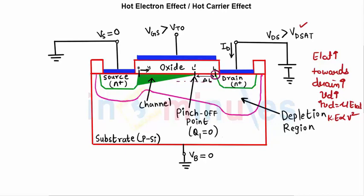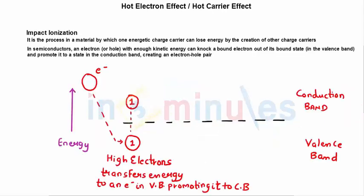The electric field is highest at that particular point near the drain. Impact ionization is a process in a material by which one energetic charge carrier can lose energy by the creation of other charge carriers. In this case the hot electrons, being highly energetic, lose their energy by creating other charge carriers.